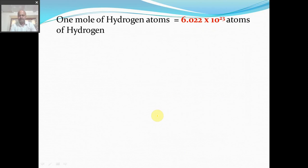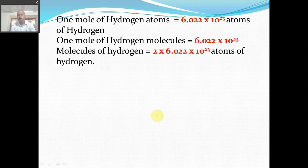For example, one mole of hydrogen atom means we have 6.022 × 10²³ atoms of hydrogen. Similarly, one mole of hydrogen molecule means 6.022 × 10²³ molecules of hydrogen, and this is equal to 2 × Avogadro number of atoms of hydrogen, because one molecule of hydrogen is formed from two atoms of hydrogen.